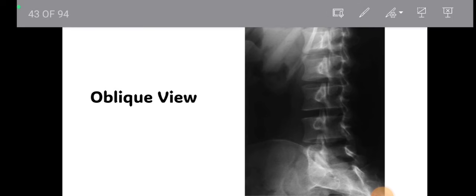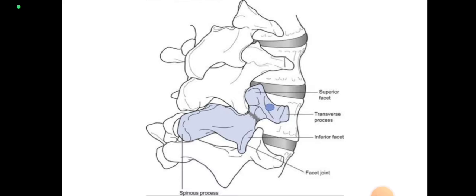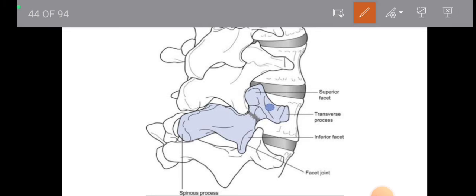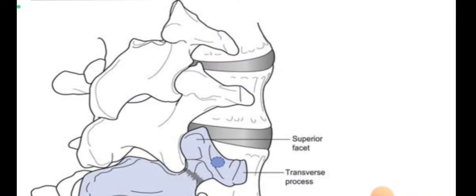Now let's talk about the oblique view, which is less commonly used — generally used in cases of spondylolysis. We are projecting the x-rays from the oblique side of the body. The oblique view is somewhat hard to interpret, but there is one important sign called the scotty dog appearance. If we watch the lumbar vertebra from the oblique side, we can see the superior articular facet, transverse process, inferior articular facet, and facet joint.